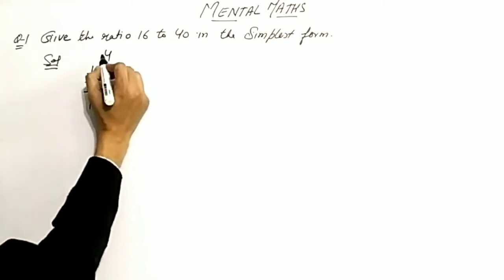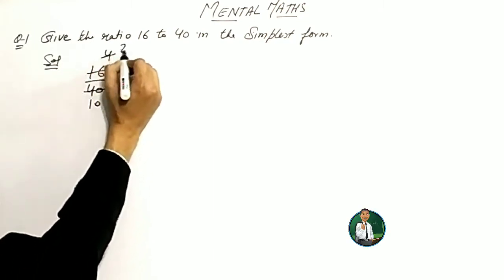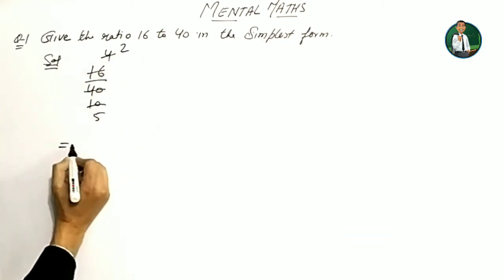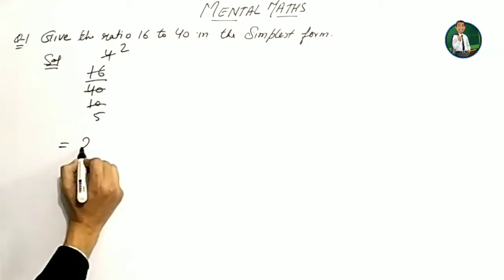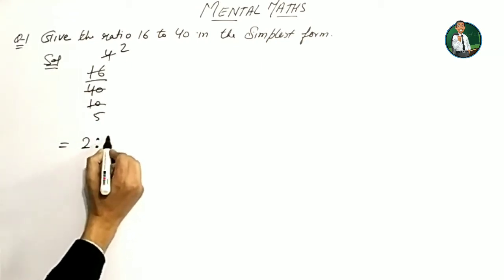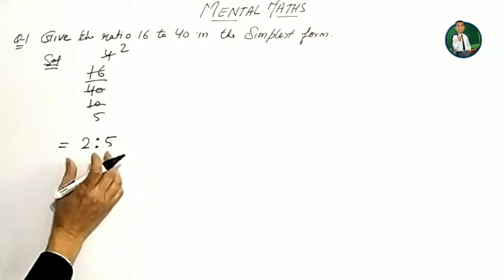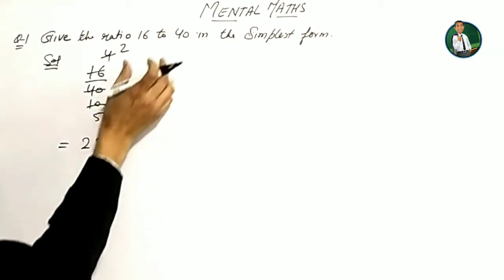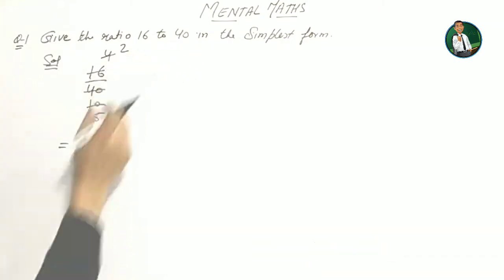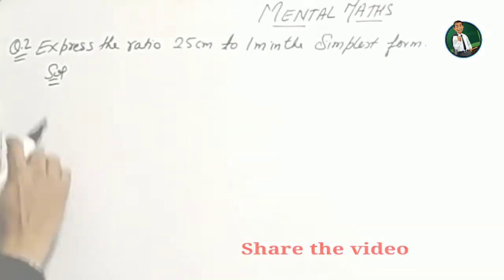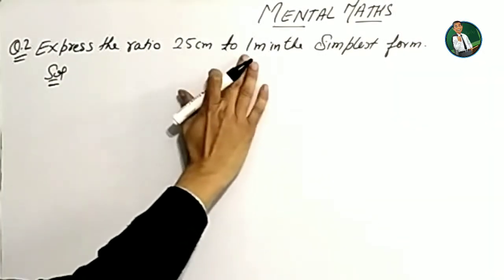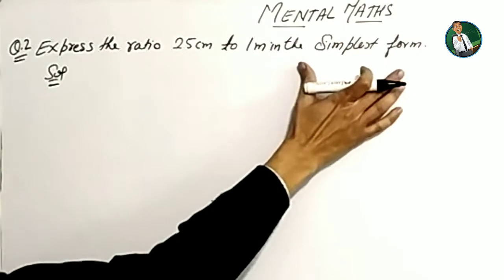So 4 goes into 4 giving 1, and 4 goes into 10 giving 2.5 — meaning 2 divided by 5. So the simplest form of 16 to 40 is 2 is to 5.